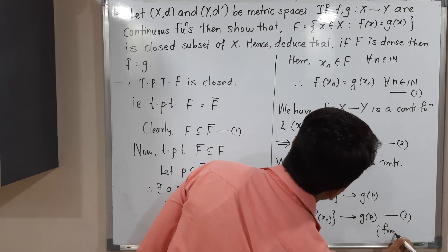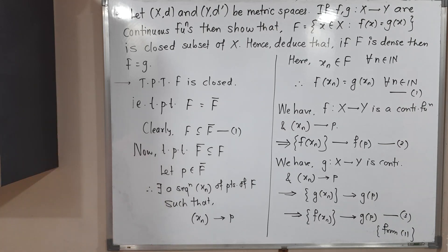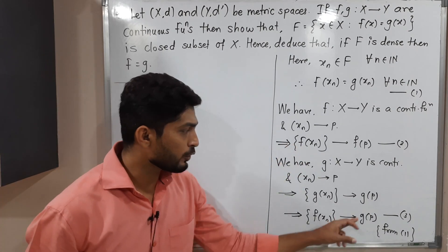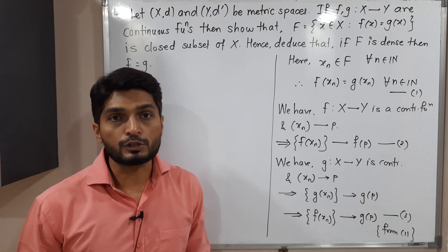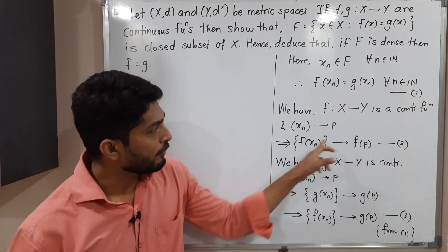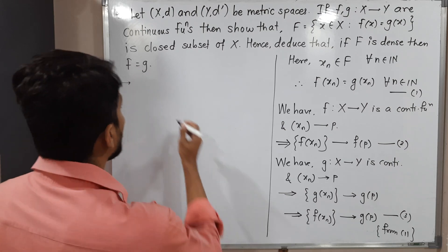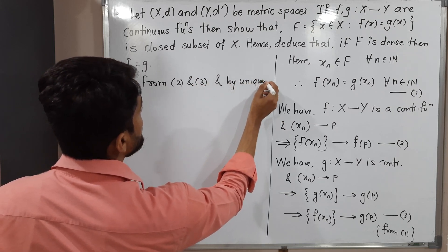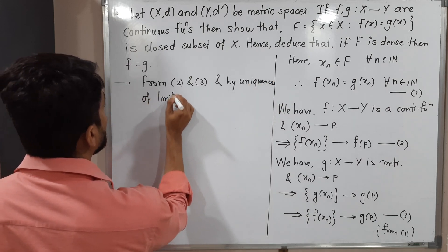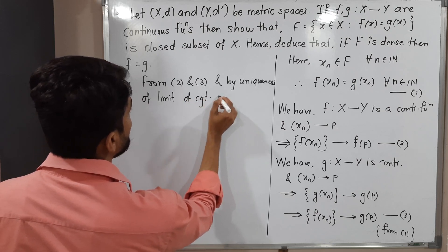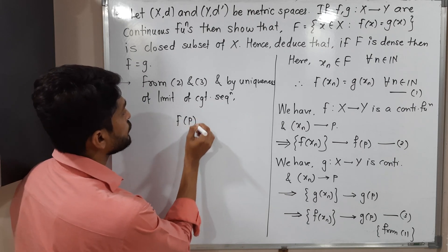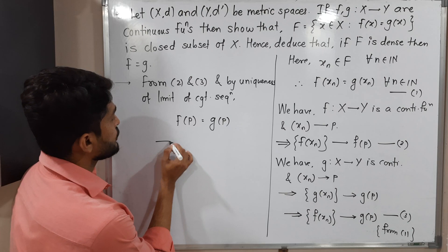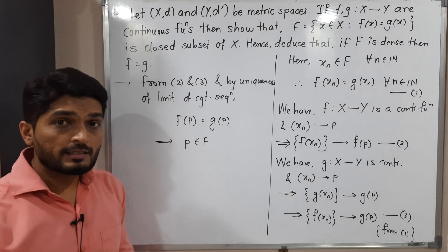So we have f(xₙ) → f(p) from equation (2) and f(xₙ) → g(p) from equation (3). Since f(xₙ) is a convergent sequence, it converges to a unique limit. Therefore, from (2) and (3), by the uniqueness of the limit of a convergent sequence, we conclude f(p) = g(p). This means point p satisfies the definition of F, so p ∈ F.